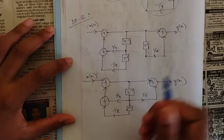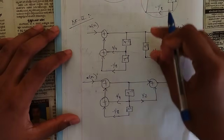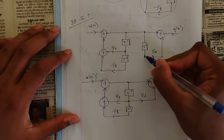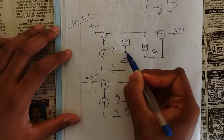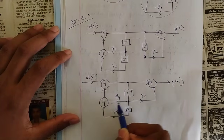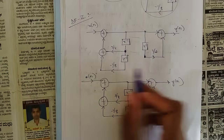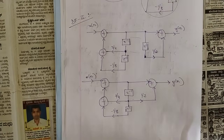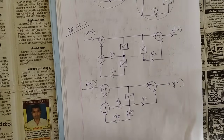The final DF2 structure has a single shared delay line: from the input summer, one Z⁻¹ delay leads to a common node where coefficient 3/4 feeds back and coefficient 1/2 feeds forward; a second Z⁻¹ delay leads to another node where -1/8 feeds back. This merging of the two delays into one common path is the key advantage of DF2. That covers how to draw both DF1 and DF2 structures.